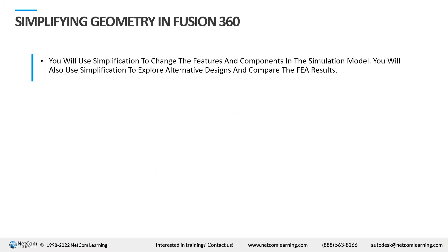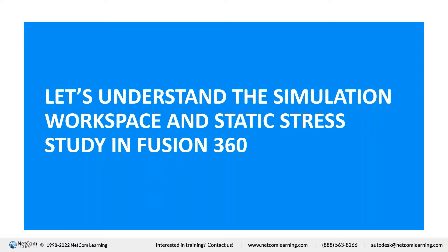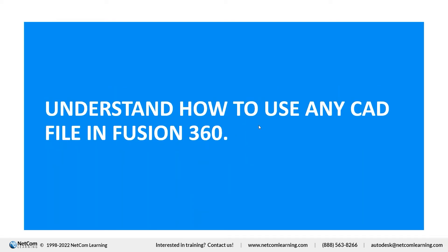Next is simplifying geometry in Fusion 360. This is a really cool feature you can perform while using the simulation workbench. You can use simplification to change features and components — adding or removing features — while doing the simulation to get different results from the studies. Now let us understand the simulation workspace and the static stress study in Fusion 360, and how to use CAD files in Fusion 360.